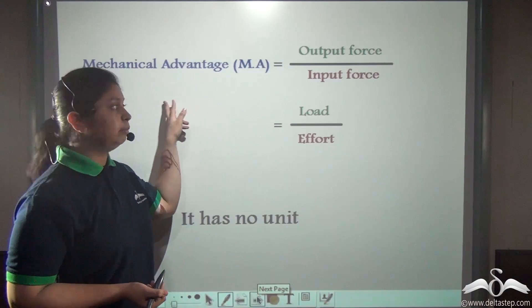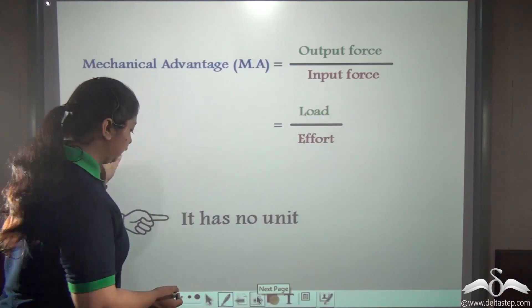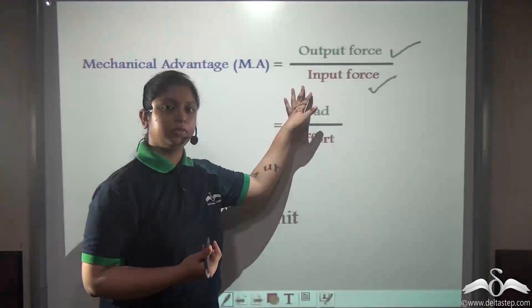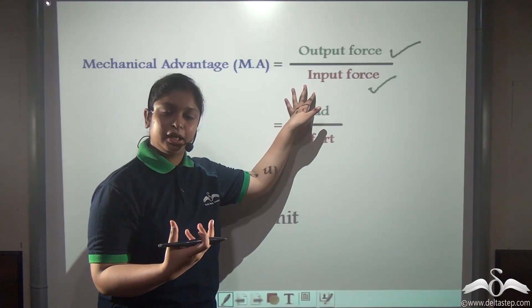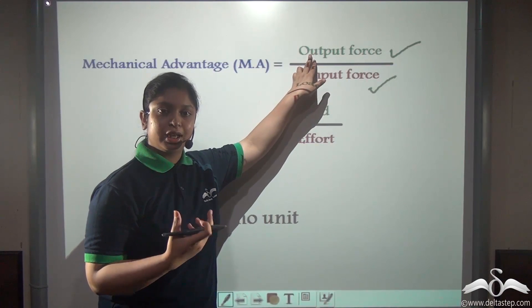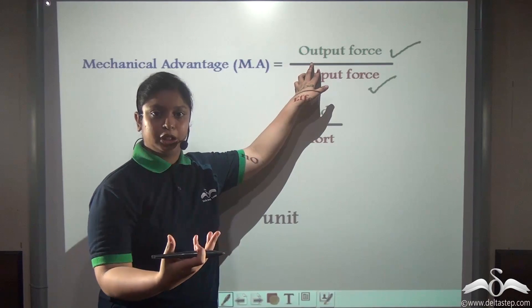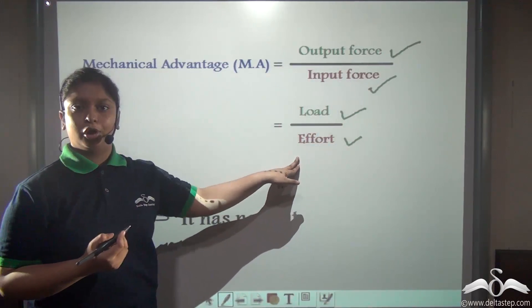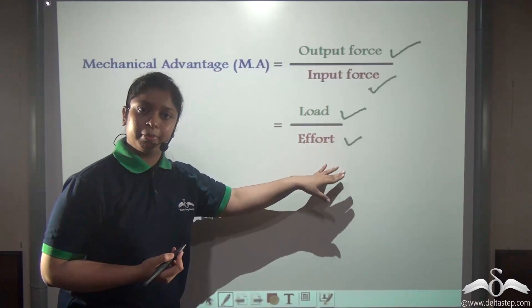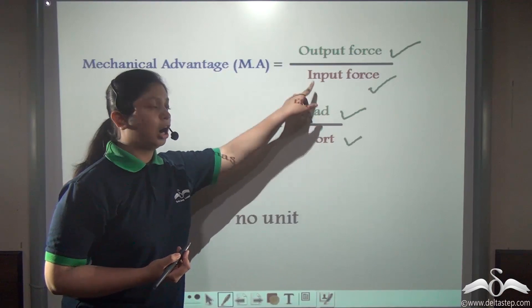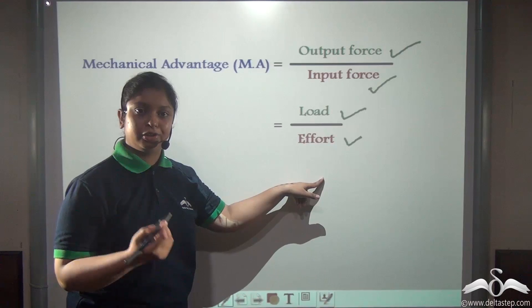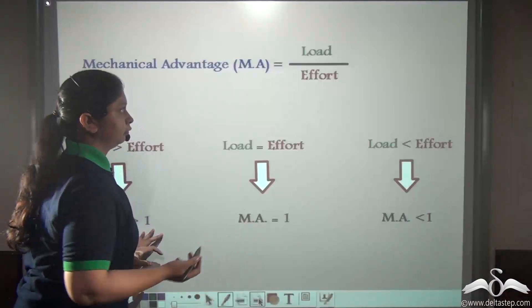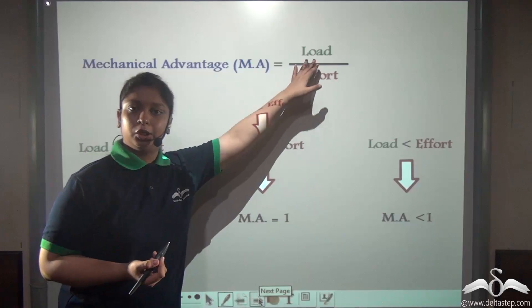Mechanical advantage can be described by the following formula. Mechanical advantage is given by the output force divided by the input force. The input force is the effort you apply on the machine, and the output force is the force exerted on the load. So this expression can be written as load divided by effort. Since both load and effort are forces, they cancel each other's units, therefore mechanical advantage does not have any unit.